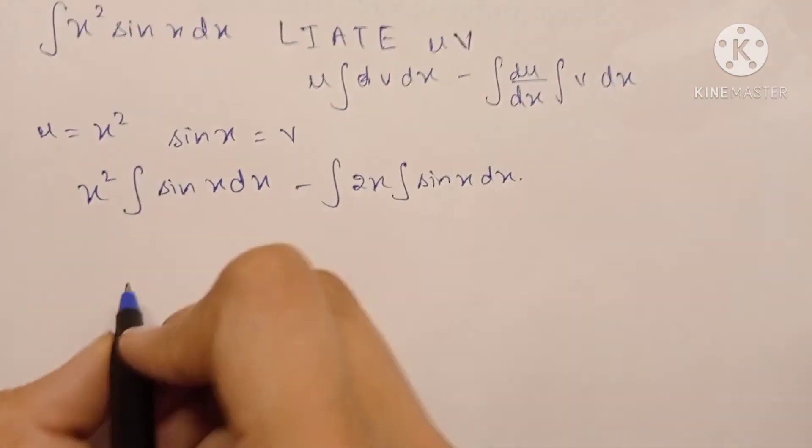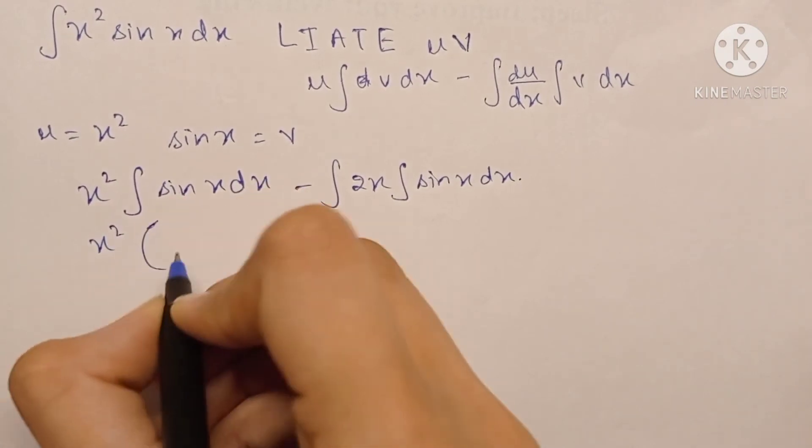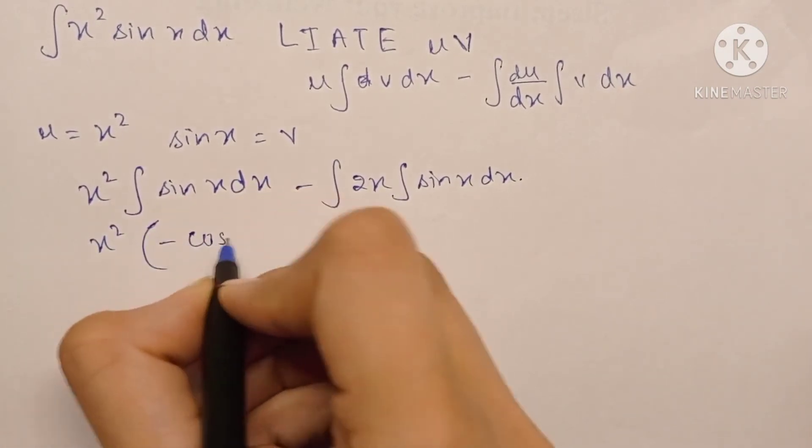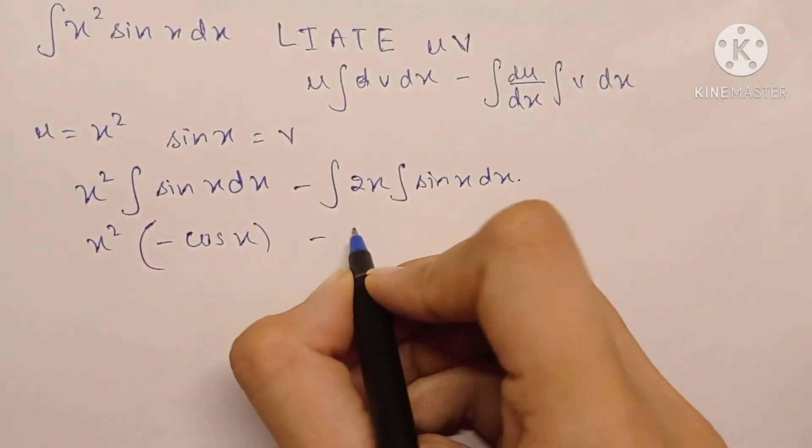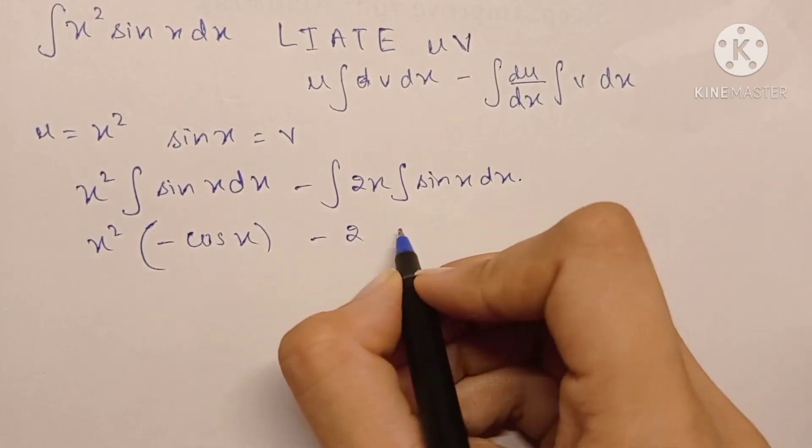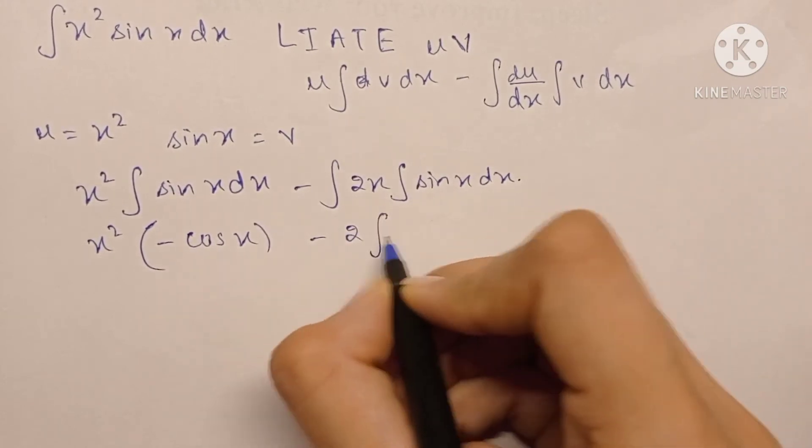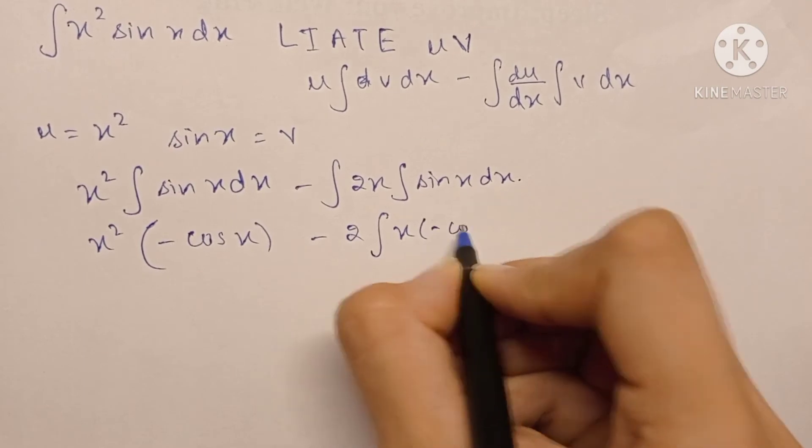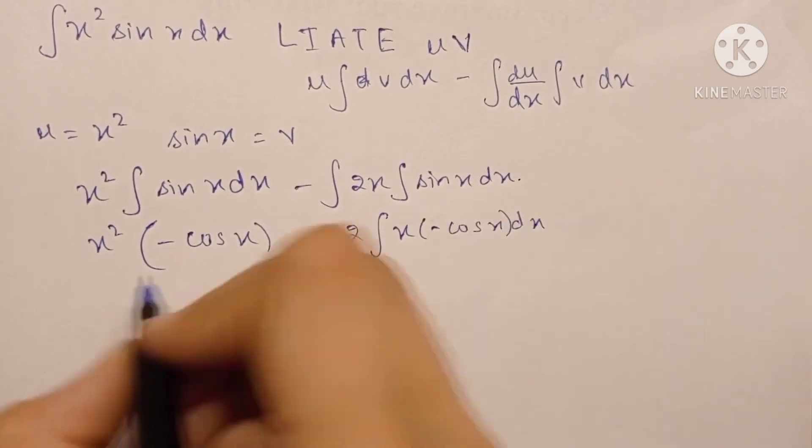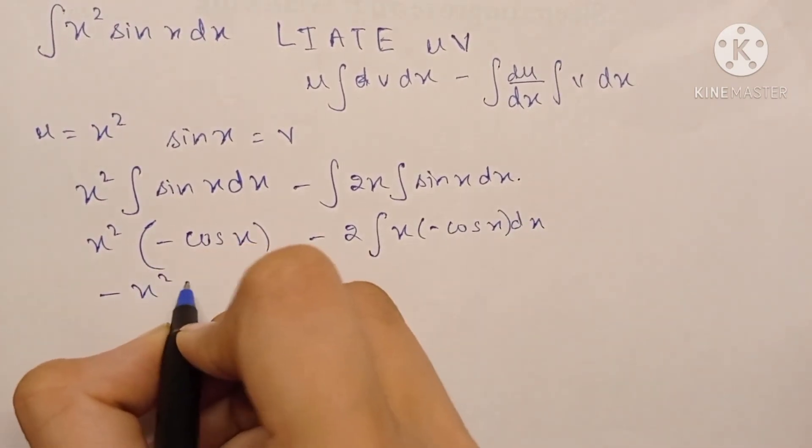So x², the integration of sine x is minus cos x. We can take this 2 outside because it's a constant. Then we have x into minus cos x dx. So this becomes minus x² cos x.